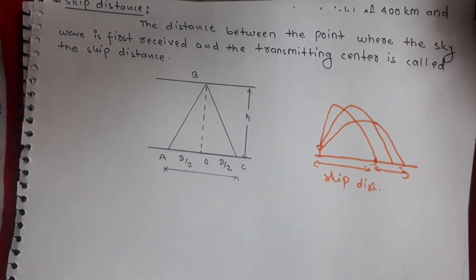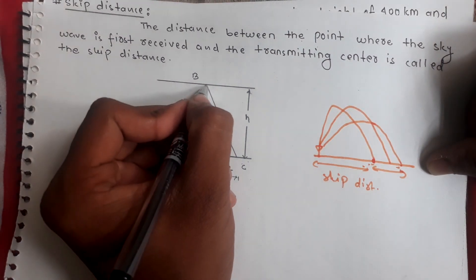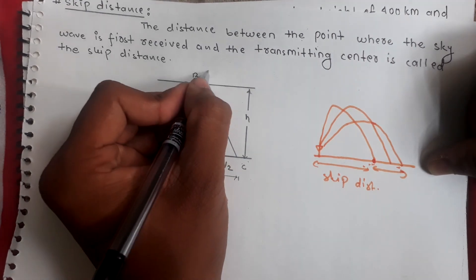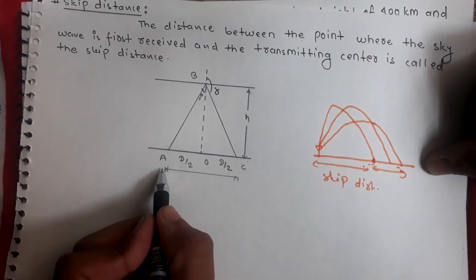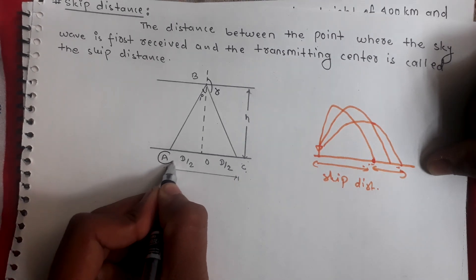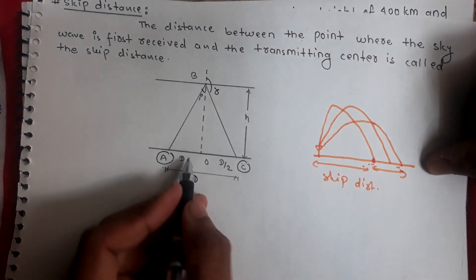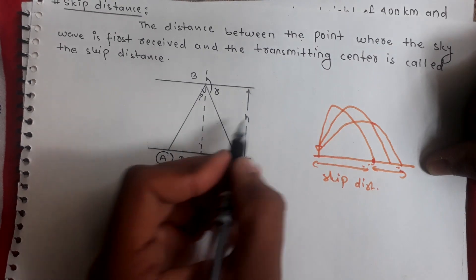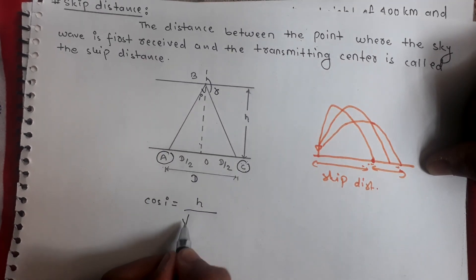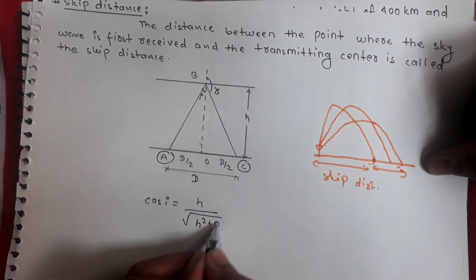Now let's move to the mathematics. For calculating skip distance, we consider the earth to be a flat surface. The wave travels to the ionosphere and is incident at angle of incidence I. Let this be the normal, and the wave reflects back to the earth at angle of reflection R. Point A is the origin of the signal and point C is the first received signal. Consider the distance to be d. We can write: cos(i) = height of the ionosphere / hypotenuse, where hypotenuse equals the square root of (h² + d²/4).